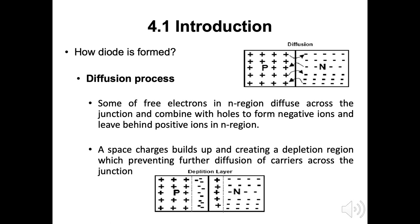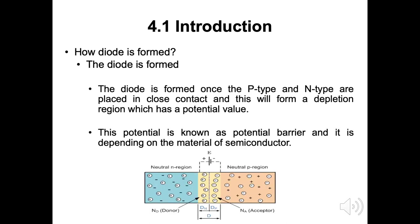The diffusion process occurs after the P-N junction is obtained. Free electrons in the N-region diffuse across the junction and combine with holes in the P-region to form negative ions, leaving behind positive ions in the N-region. A space charge builds up, creating a depletion region which prevents further diffusion of carriers across the junction. The diode is formed once the P-type and N-type are placed in close contact, and this forms a depletion region which has a potential value.